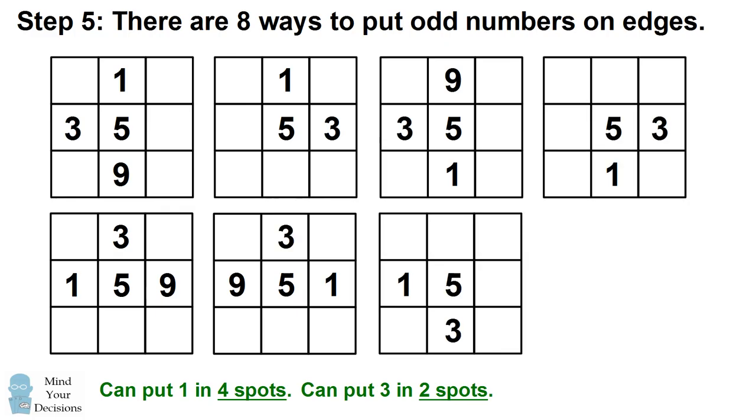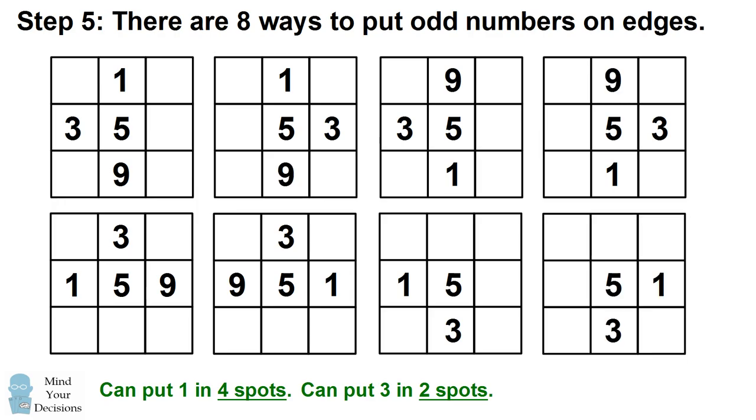So in each one of these possibilities, we can put 3 in two different spots that are perpendicular to wherever the row or the column that the 1 is. And now we're going to have to fill in the 9s and the 7s from the 1s and 3s that we put in, because 7 has to be opposite 3 and 9 has to be opposite 1.